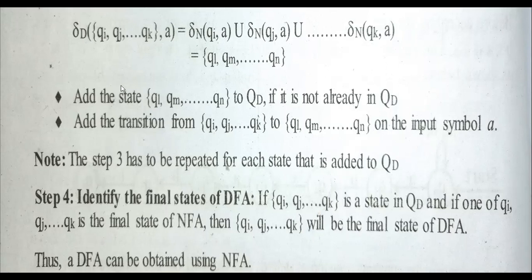This is how we decide the DFA states. If the resulting set is not already in QD, it becomes a new state. Step 3 has to be repeated for each state added to QD — every new state we find, we need to compute its transitions. When we solve the first problem, this will be easy to understand.